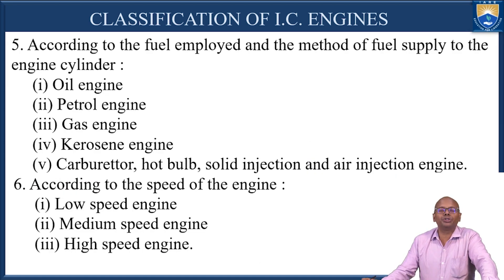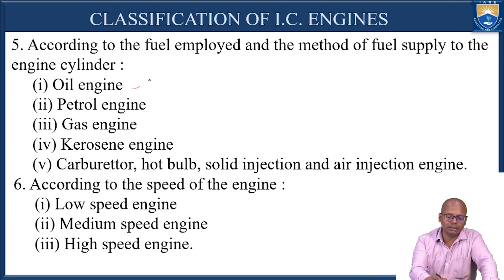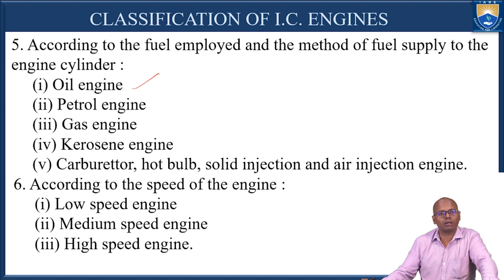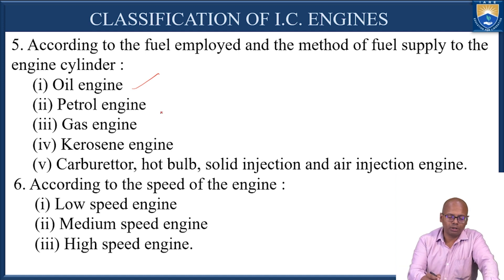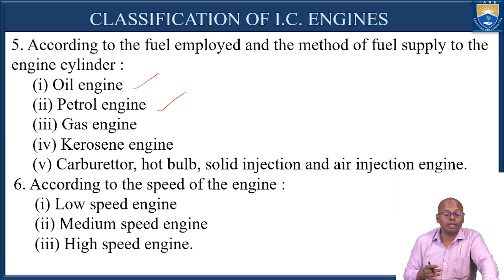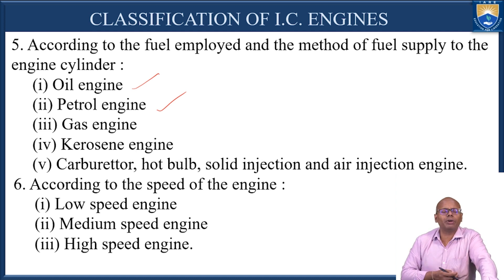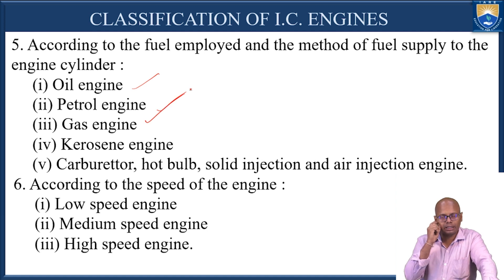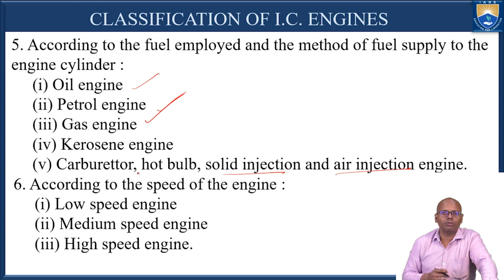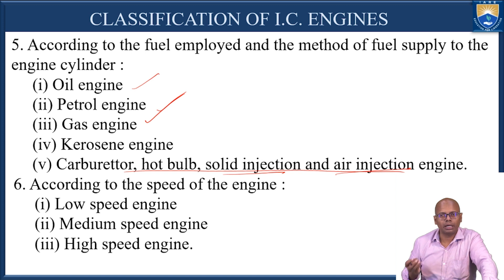Based on the fuel used, IC engines are classified as: oil engine (using kerosene or other oils), diesel engine (using diesel), petrol engine (using petrol), and gas engine (using gases such as CNG — compressed natural gas). There are also classifications based on the method of fuel supply: carburetor, hot bulb, solid injection, air injection, and similar methods.